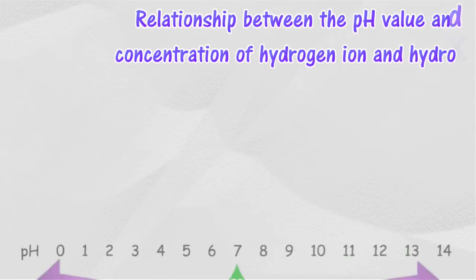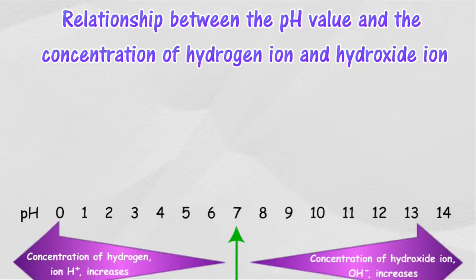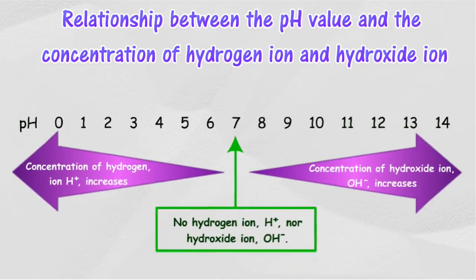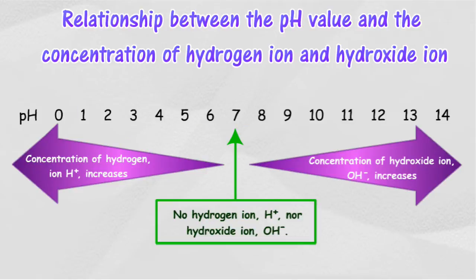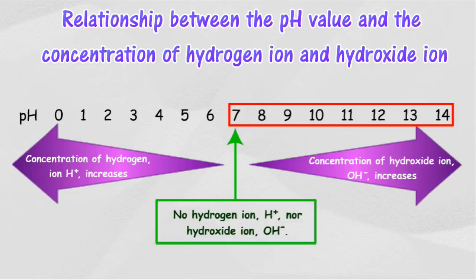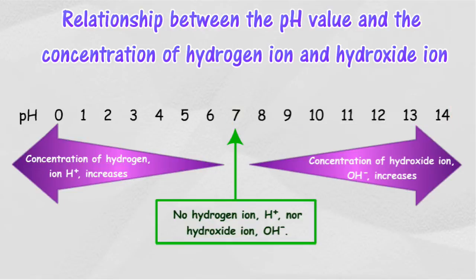The pH scale can be used to compare the concentration of hydrogen ions in an acidic solution. The more concentrated the hydrogen ions in the solution, the smaller its pH value. The pH scale can also be used to compare the concentration of hydroxide ions in an alkaline solution. The more concentrated the hydroxide ions, the bigger its pH value.